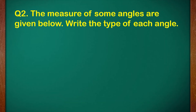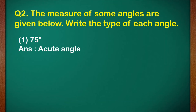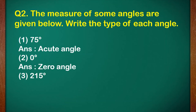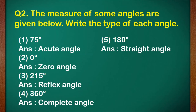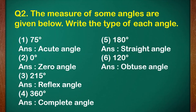The second question: the measure of some angles are given below — write the type of each angle. 75 degrees is an acute angle. Zero degree is a zero angle. 215 degrees is a reflex angle — it is more than 180 and less than 360. 360 degrees is a complete angle. 180 degree is a straight angle. 120 degrees is an obtuse angle — obtuse angle measures more than 90 and less than 180.